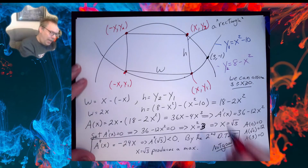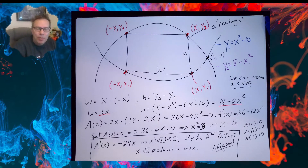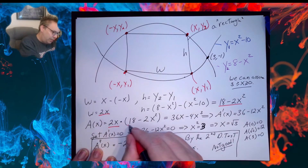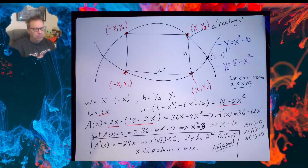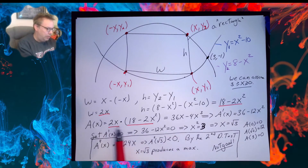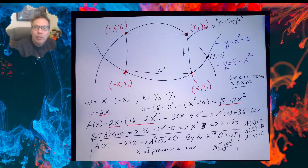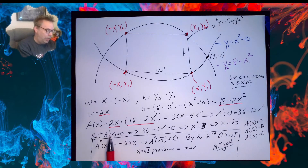So now I have a height and a width. I need to multiply those together. We're eventually going to have to take a derivative of this, so let me multiply it out: 2x times 18 is 36x, and 2x times 2x squared is 4x cubed. Taking the derivative gives 36 minus 12x squared. I need to find the critical values, so setting the derivative equal to zero gives us x equals root 3.